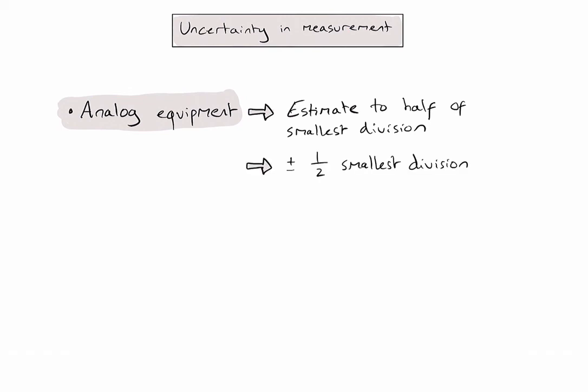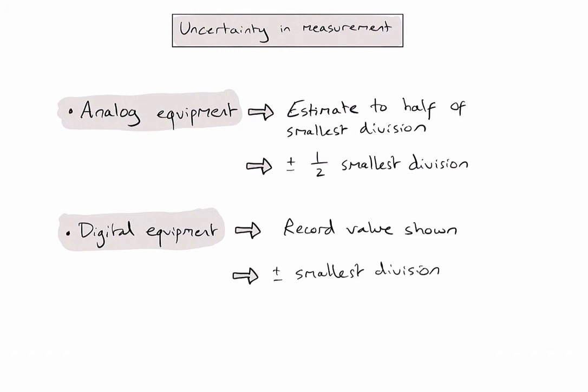For digital equipment, we can directly record the value shown on the screen. And then give an uncertainty of plus or minus the smallest division or smallest measurement that we're able to make on that equipment. And remember that stopwatches are an exception where we're allowed to make some assumptions.